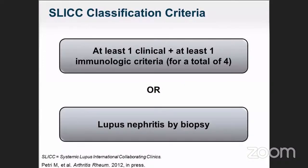For the latest SLE diagnostic criteria, you need clinical and immunological criteria. You need at least four clinical criteria plus at least one immunological criterion for a definitive diagnosis. If you have one clinical feature, you begin to consider SLE. A kidney biopsy showing lupus nephritis alone is sufficient to diagnose SLE.